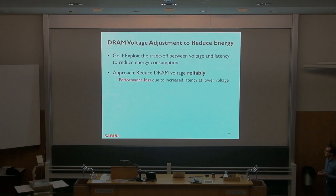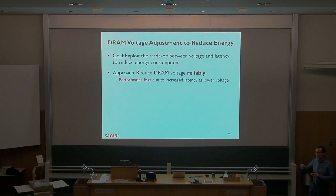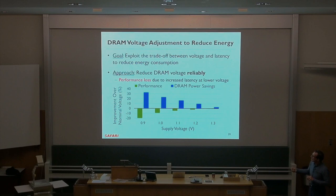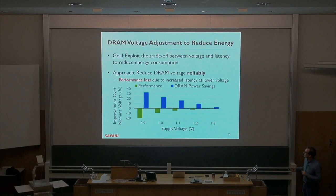The approach: reduce DRAM voltage reliably without sacrificing reliability. Because we're not sacrificing reliability, we get some performance loss since we need to increase latencies at lower voltages. If you reduce supply voltage to 0.9V while operating reliably, you hit performance significantly — about 20% performance loss, even though you may save power. We don't want to give up 20% performance for power savings. We want to control it — users specify a performance loss target and Voltron selects the minimum DRAM voltage without violating that target.